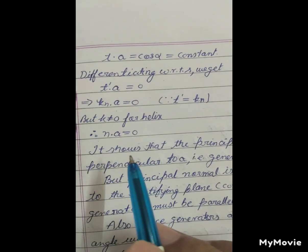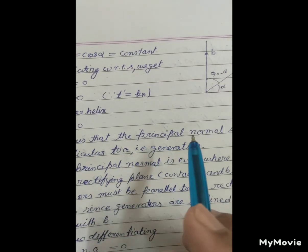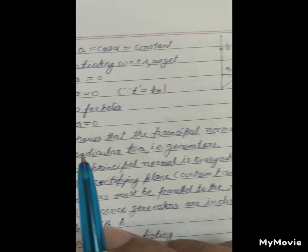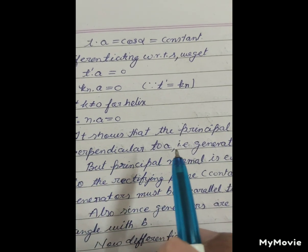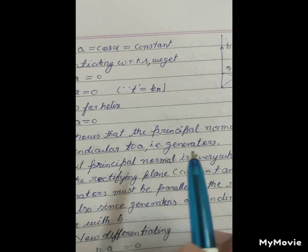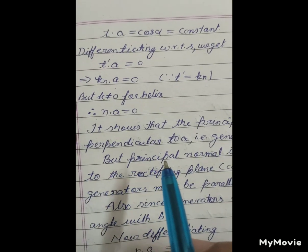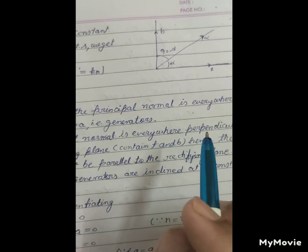It shows that the principal normal is everywhere perpendicular to A, that is, the generators.